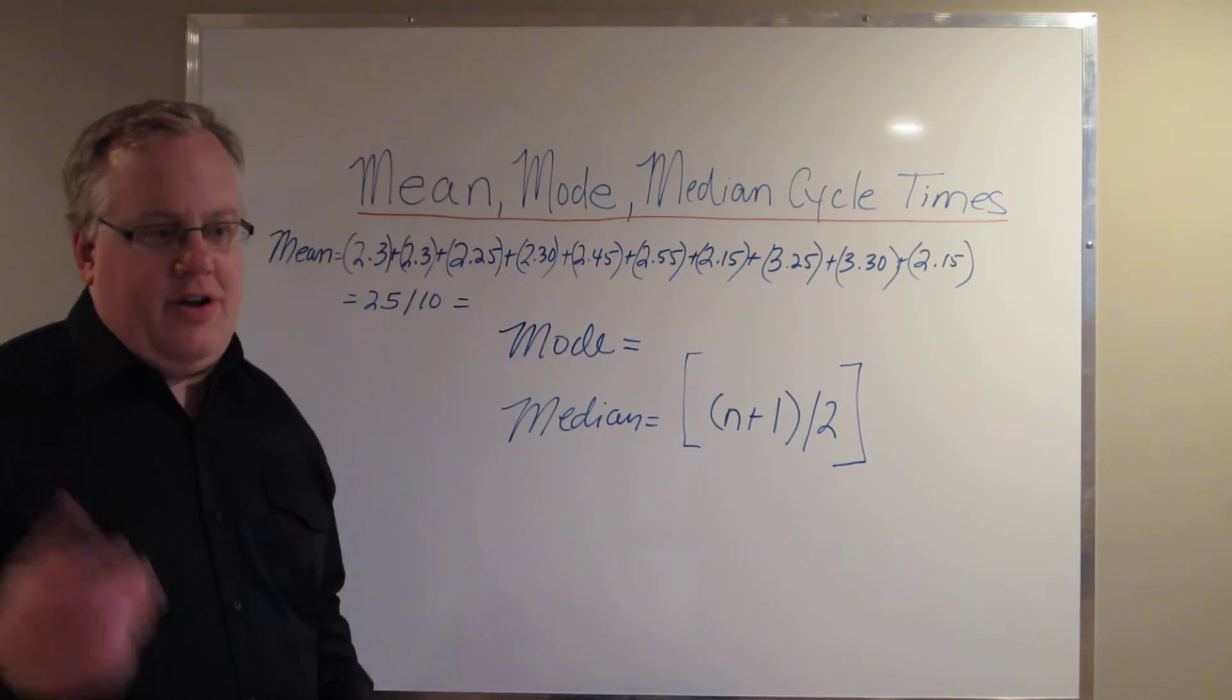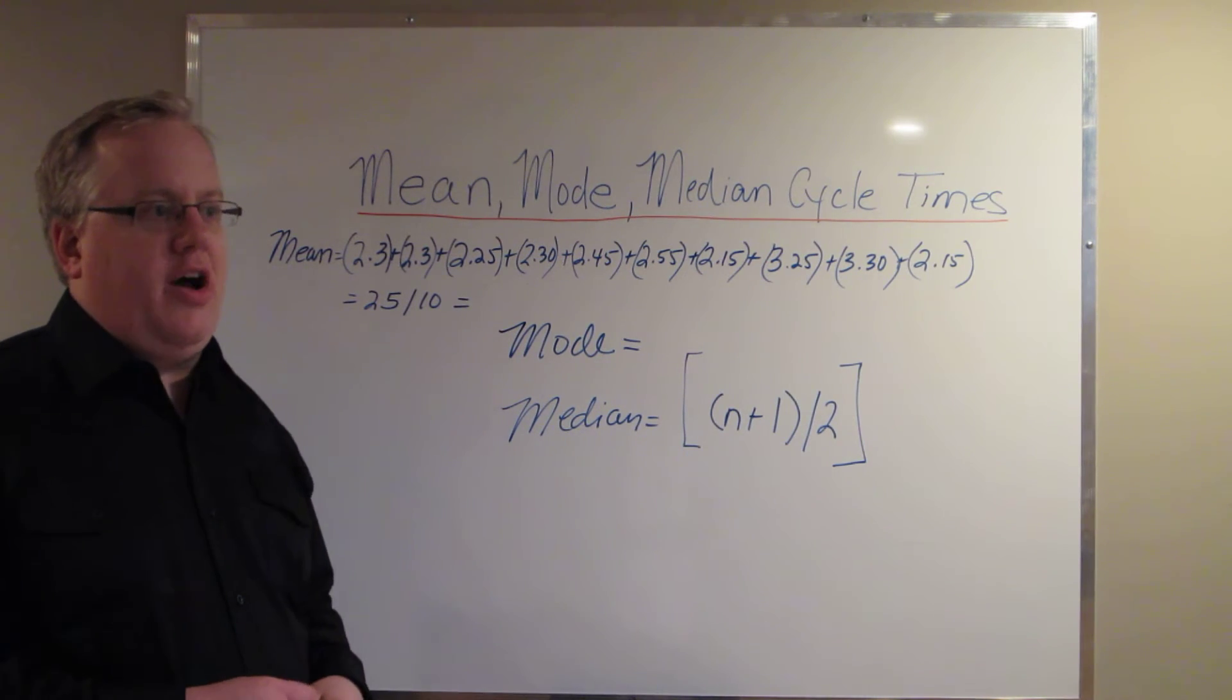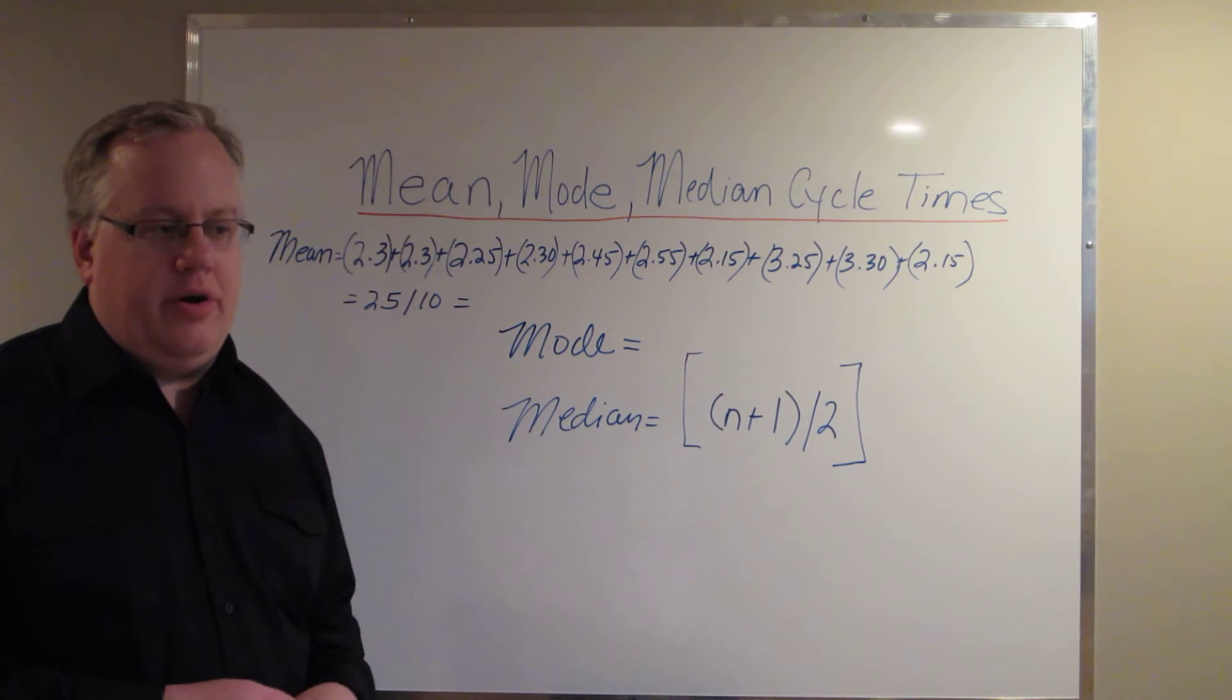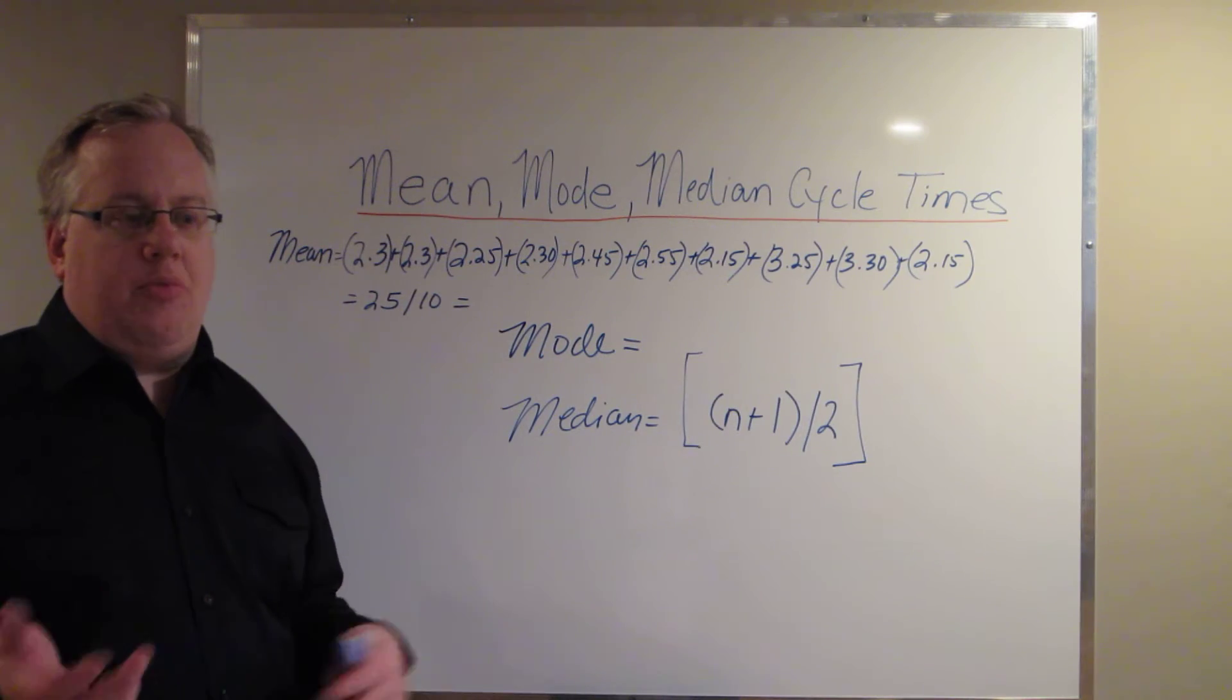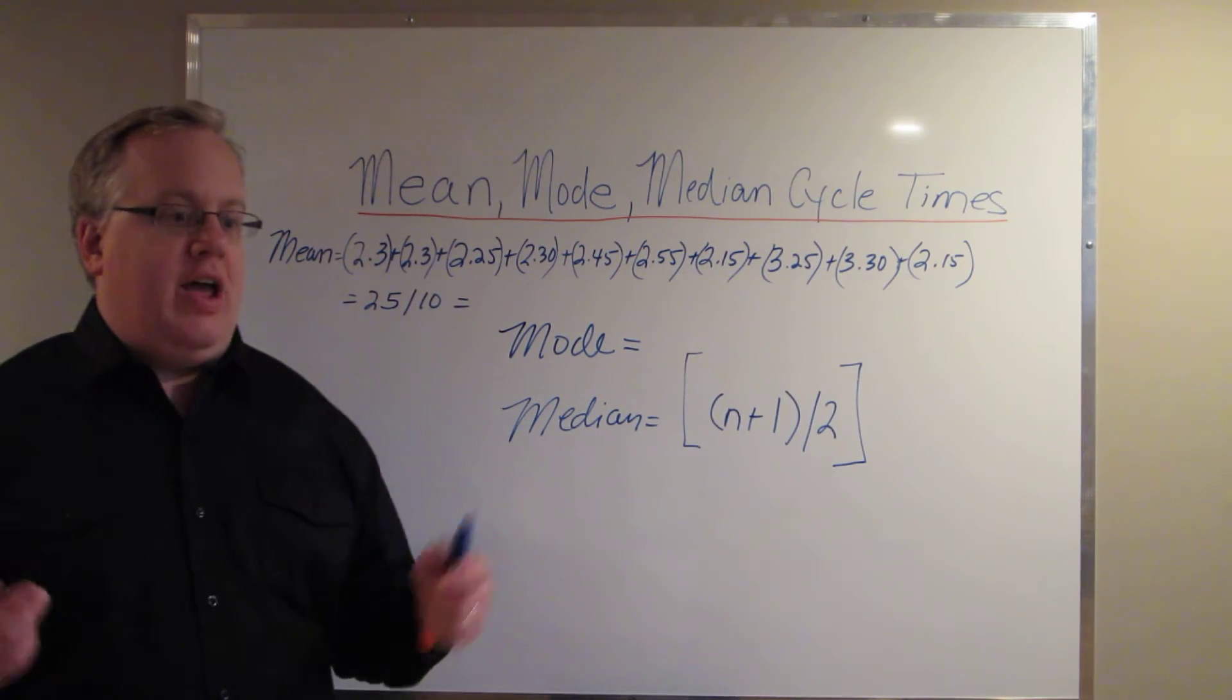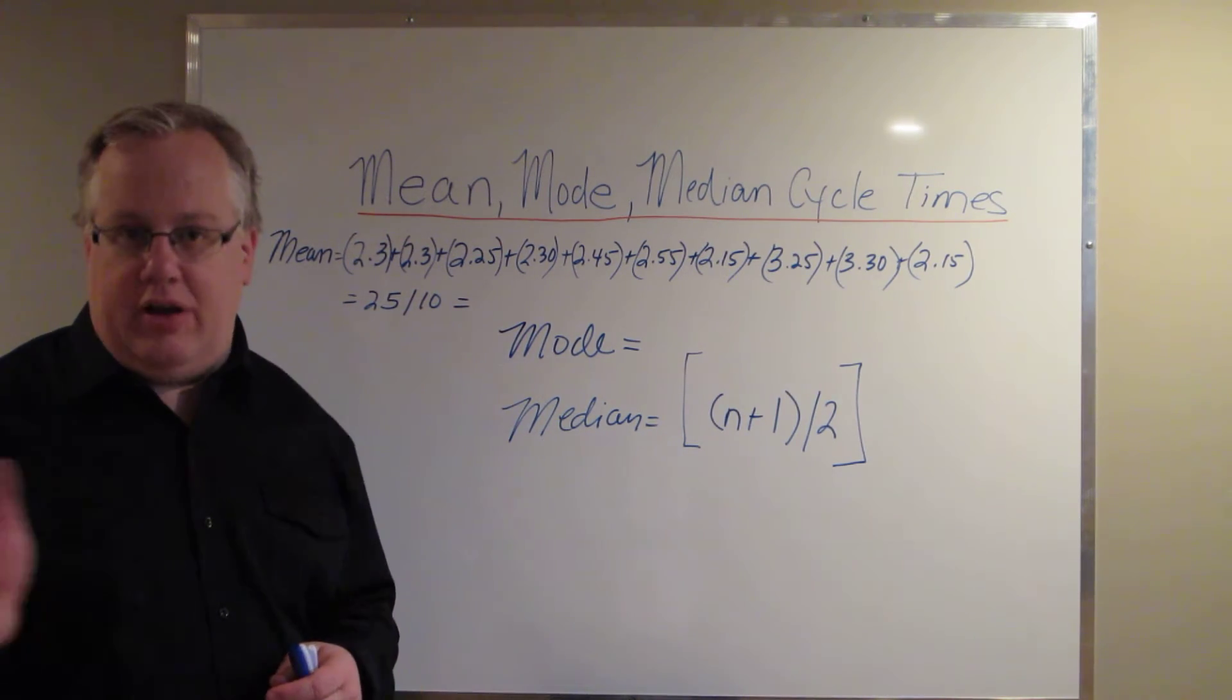Now, a lot of companies, a lot of my customers are somewhat surprised when I start talking about three methods of calculating average or the average cycle time. Most of my customers are just used to the standard and straightforward way of adding up all inside the sample portion and dividing by the number of operations.